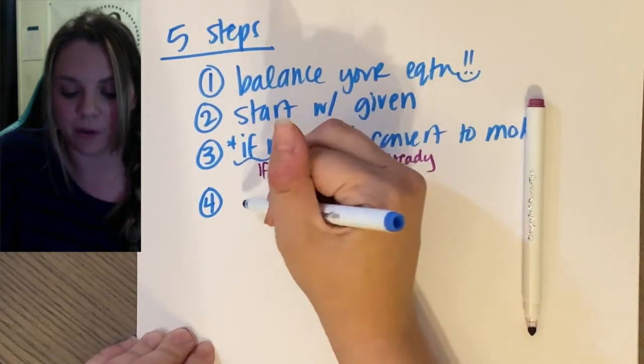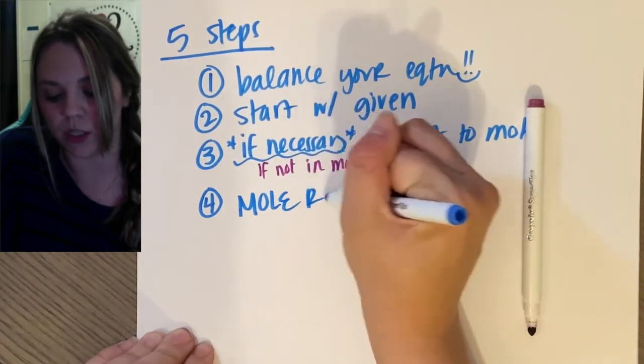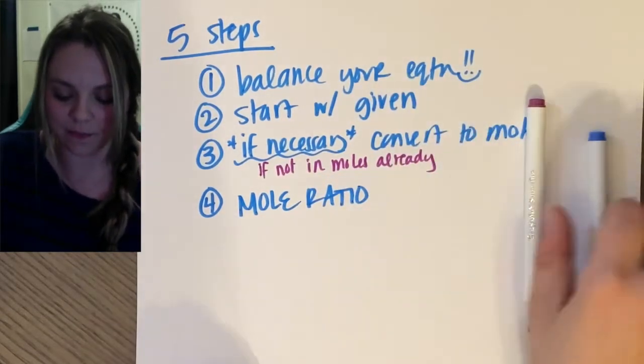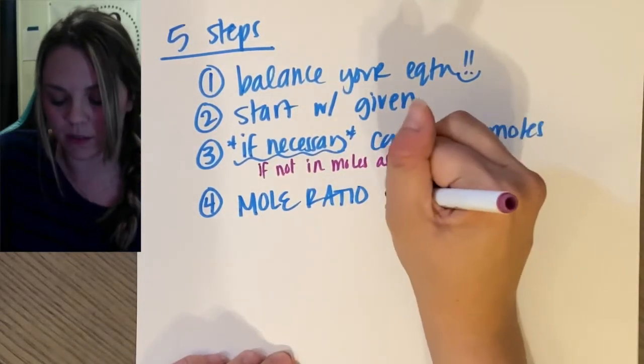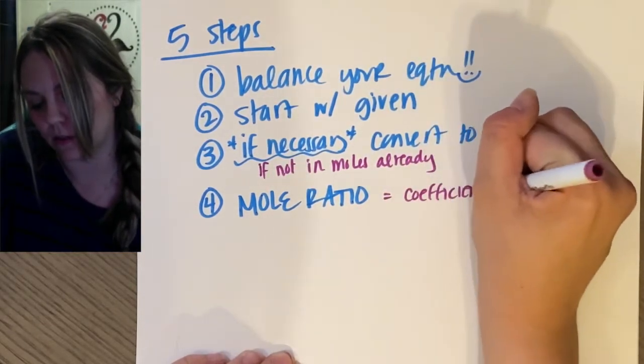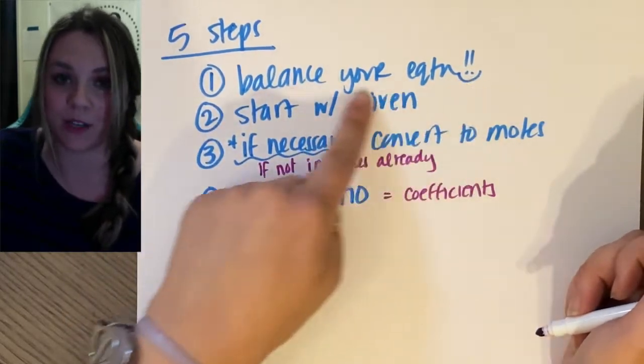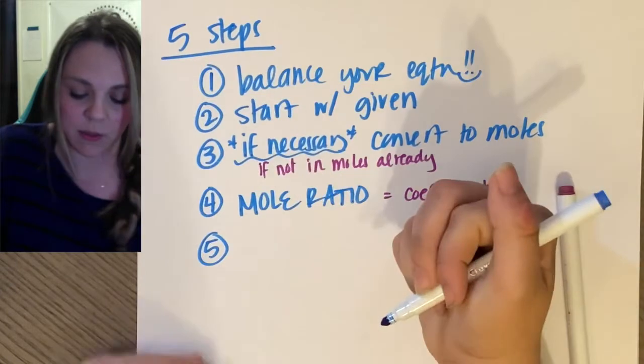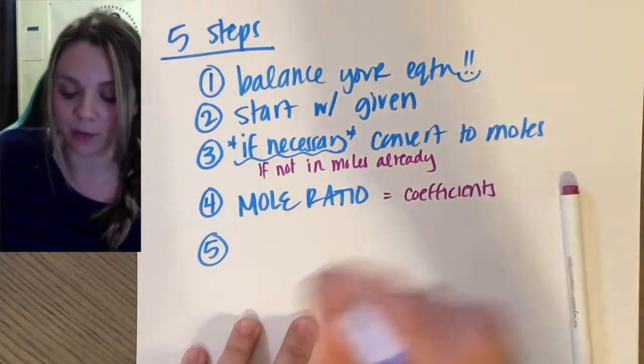Step four we use the mole ratio. So this is our brand new thing. This is easy if you're using coefficients from your balanced equation, which is why step one is super important. This is all going to be so much better when we actually look at an example.